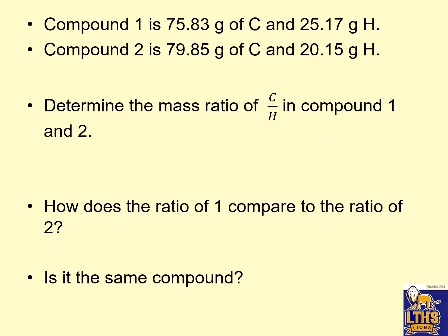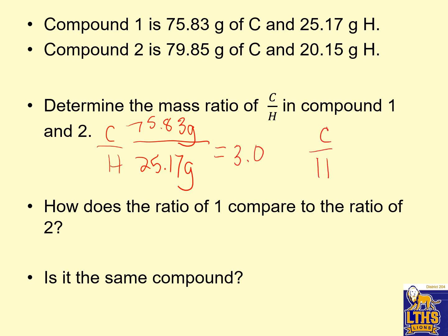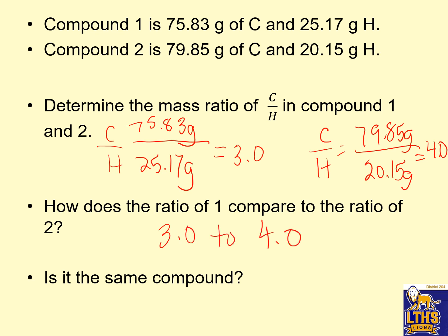Compound one is 75.83 grams of carbon and 25.17 grams of hydrogen. Compound two is 79.85 grams of carbon and 20.15 grams of hydrogen. Are they the same compound? We take the mass ratio of carbon to hydrogen. Compound one: 75.83 over 25.17 gives a ratio of 3.0. Compound two: 79.85 over 20.15 gives a ratio of 4.0. The ratios are 3.0 versus 4.0 — they are not the same compound, because they don't have the same mass ratio.